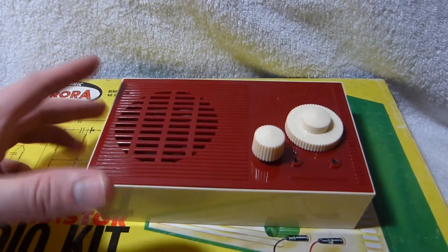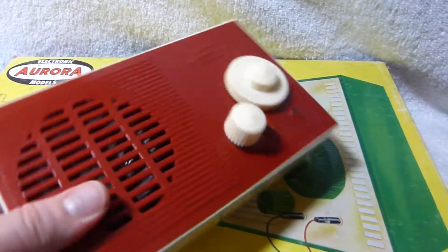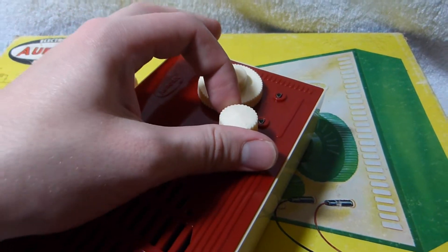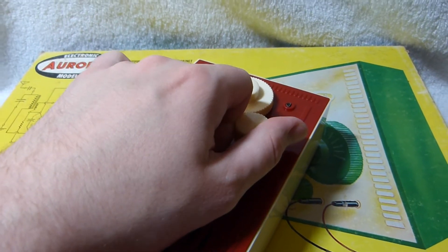All right, here's that Aurora transistor radio again. I did a previous video of it playing with the antenna and ground hooked up, but it can pick up the strongest local station without that.